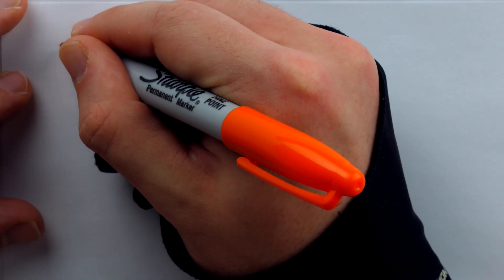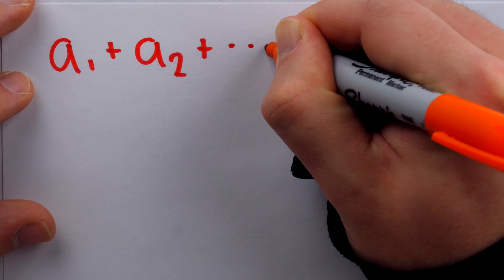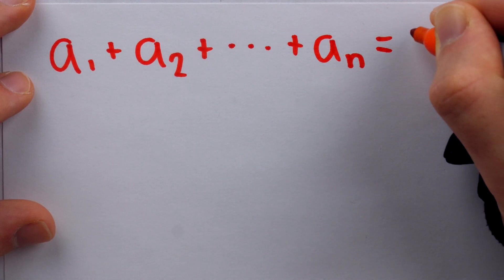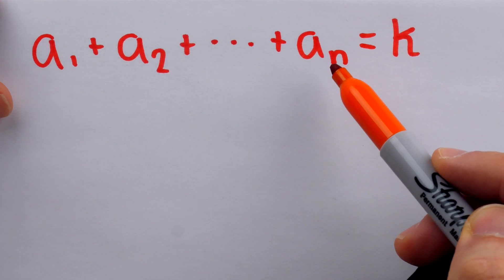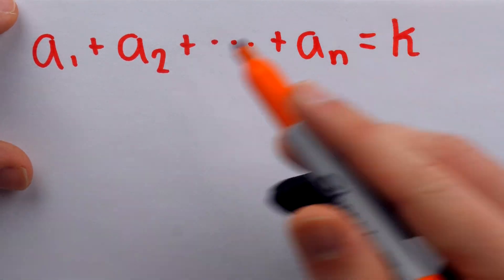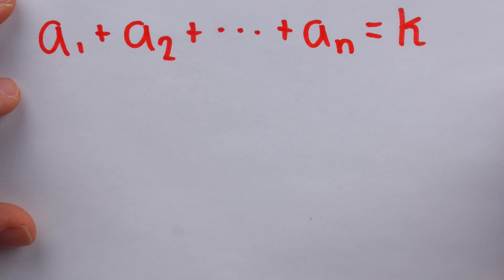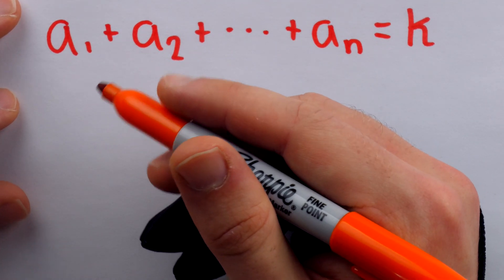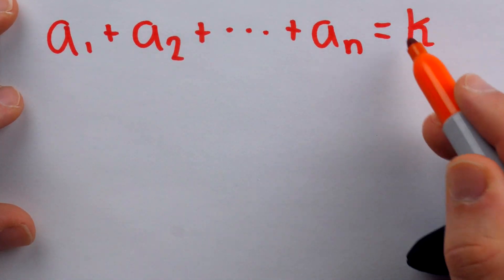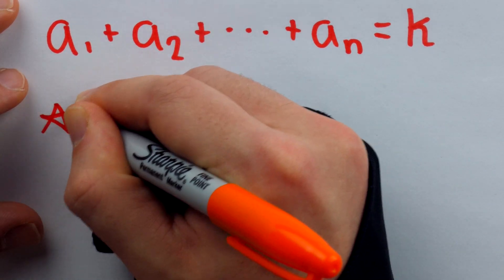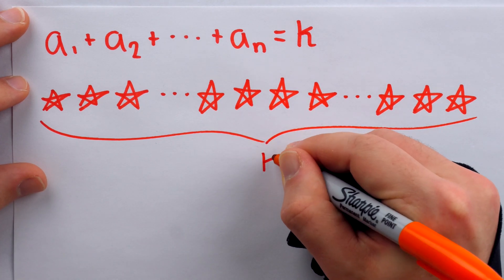Let's prove this identity in general using a technique called stars and bars. Our proof begins with counting the number of non-negative integer solutions to the equation a1 + a2 + ... + an = k. Both relevant numbers from the theorem appear here: n is the number of non-negative integers on the left side, and k is what their sum equals. To count solutions, we sketch k stars in a row — a big line of exactly k stars.